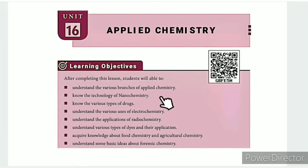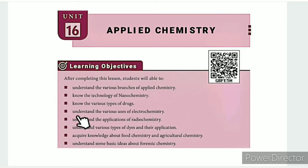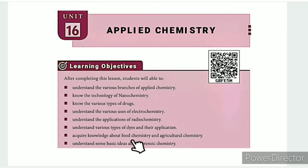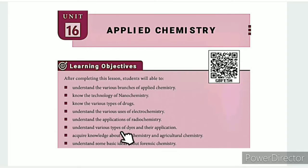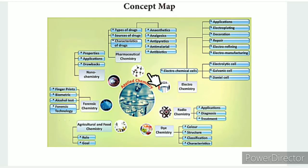In this lesson, the learning objectives are: understand the various branches of applied chemistry, know the technology of nanochemistry, know the various types of drugs, understand the various uses of electrochemistry, understand the applications of radiochemistry, and understand the various types of dyes and their applications. The learning objectives are covered in the QR code link, ICT corner link, unit guide, and concept map.